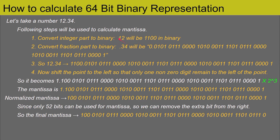Now we have converted the integer part and the fraction part to binary, and we are going to combine these two values — 1100 followed by a point and then the binary representation of 0.34. We need to focus on the position of this point. Currently it has four digits to its left, so in step four we are going to move this point to the left so that only one non-zero digit remains to its left, which means moving it three places.